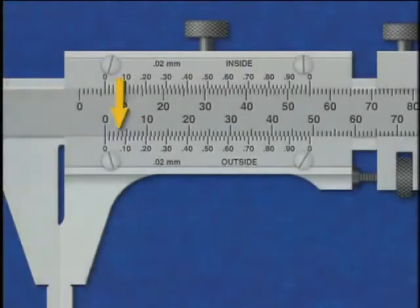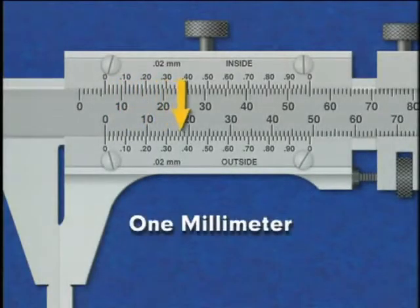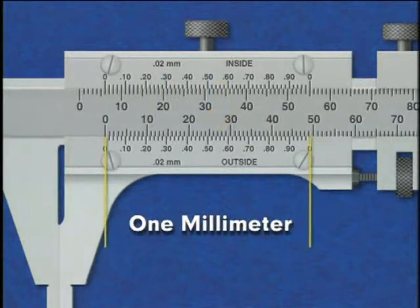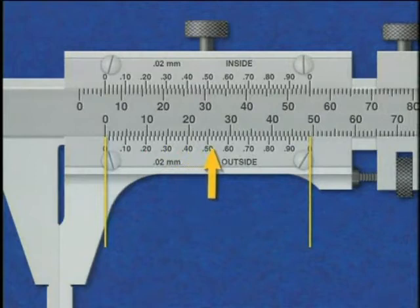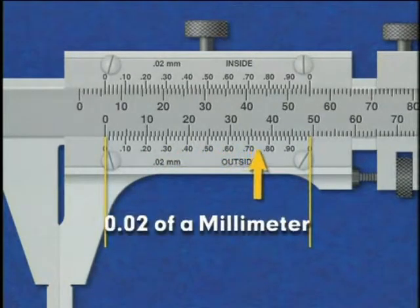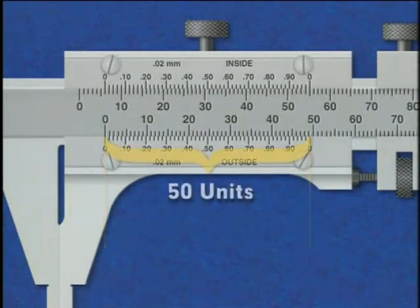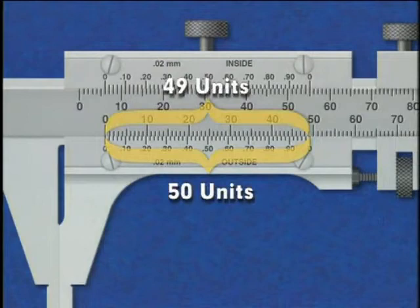Each graduation on the stationary bar represents one millimeter. The Vernier plate essentially divides one millimeter into fifty units, with each graduation representing two one-hundredths of a millimeter. These fifty units represent exactly the same distance as forty-nine units on the stationary bar.